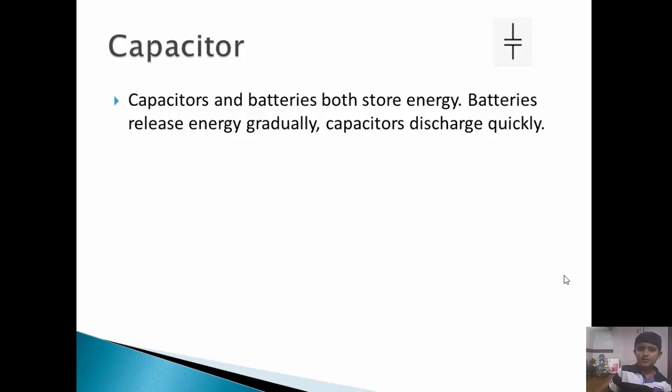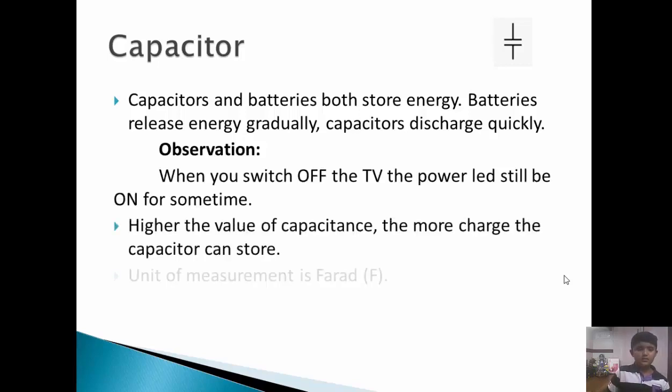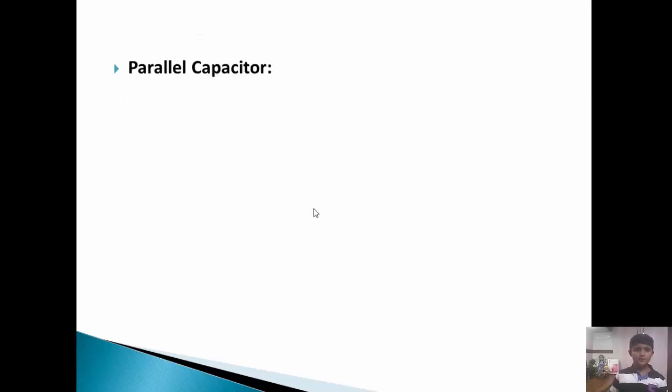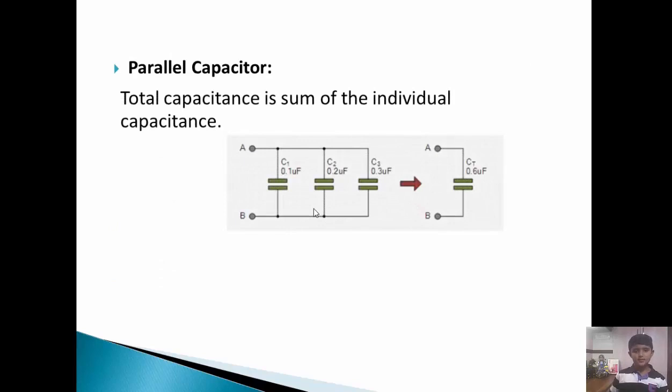The unit of measurement is Farad. Capacitors are connected in two types. The first one is parallel capacitor. Total capacitance is sum of the individual capacitance. As shown in the image, the capacitance in parallel is connected like this example: CT equals C1 plus C2 plus C3, etc.